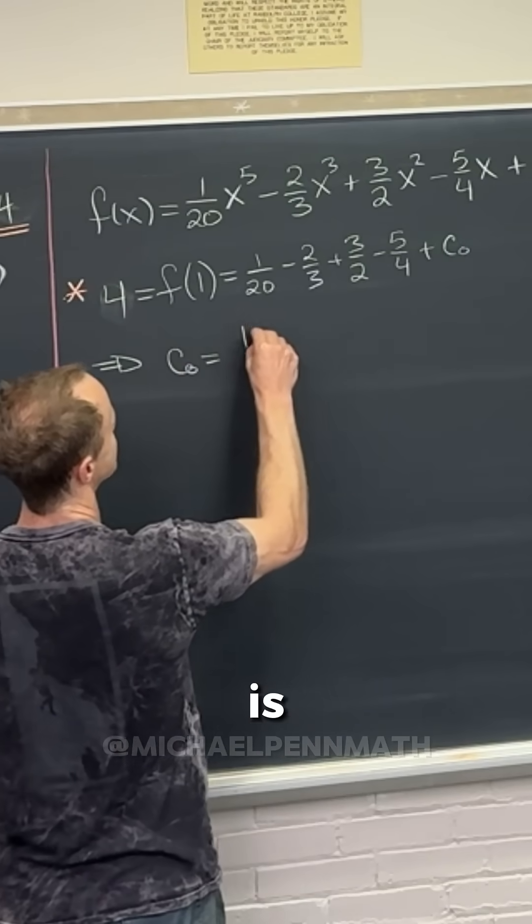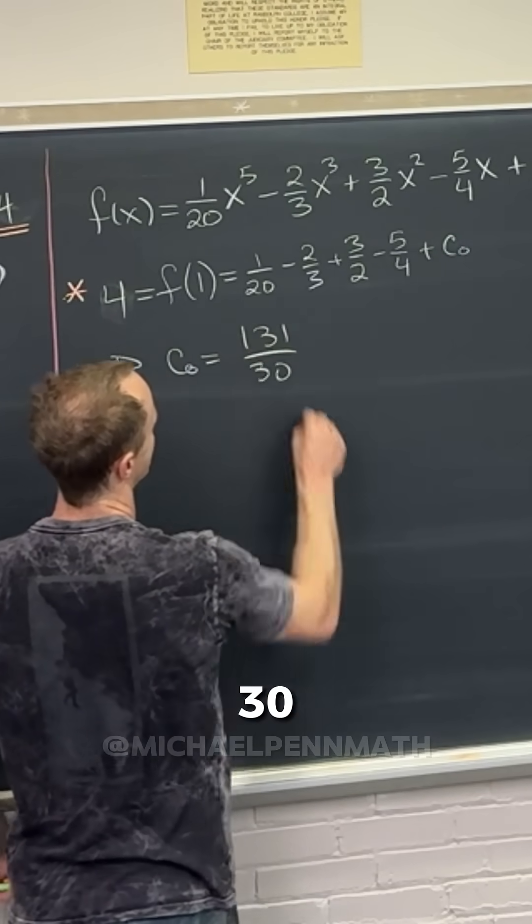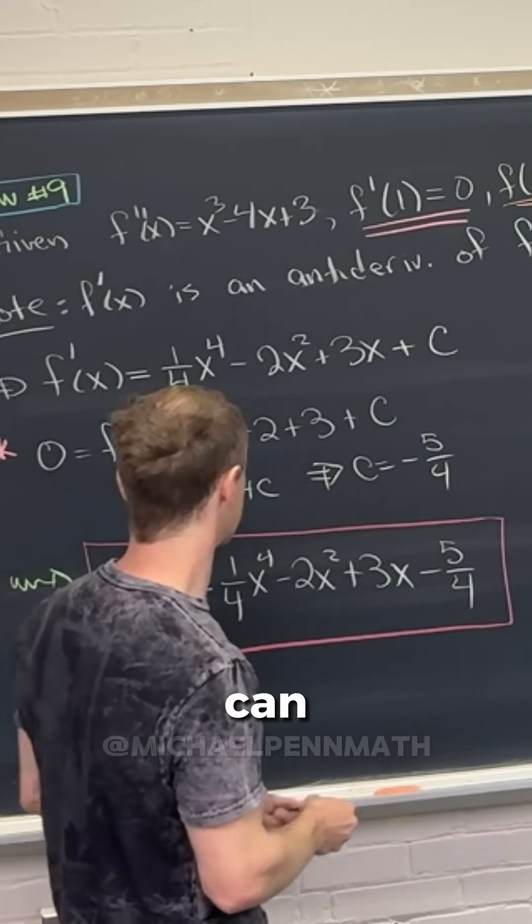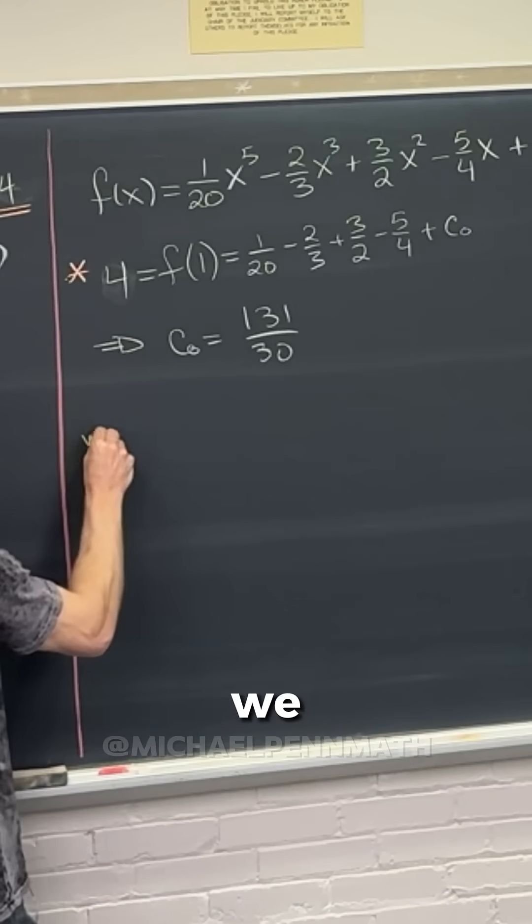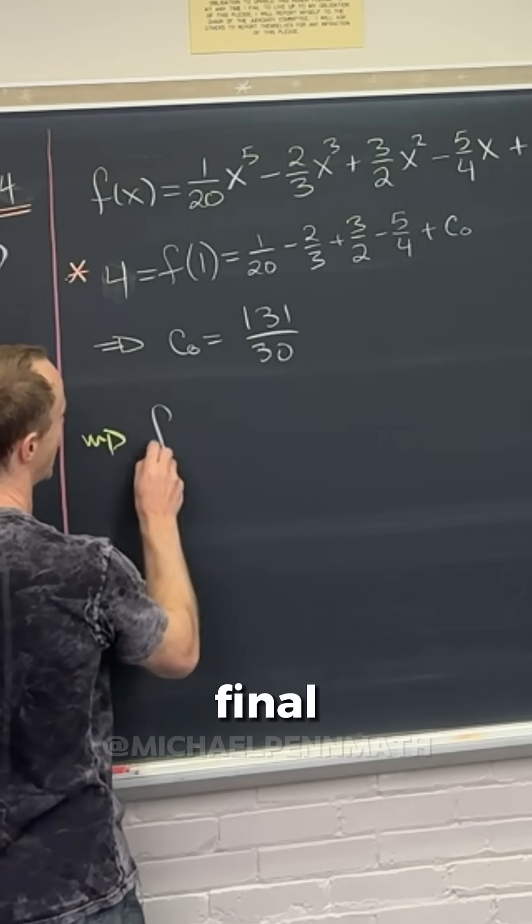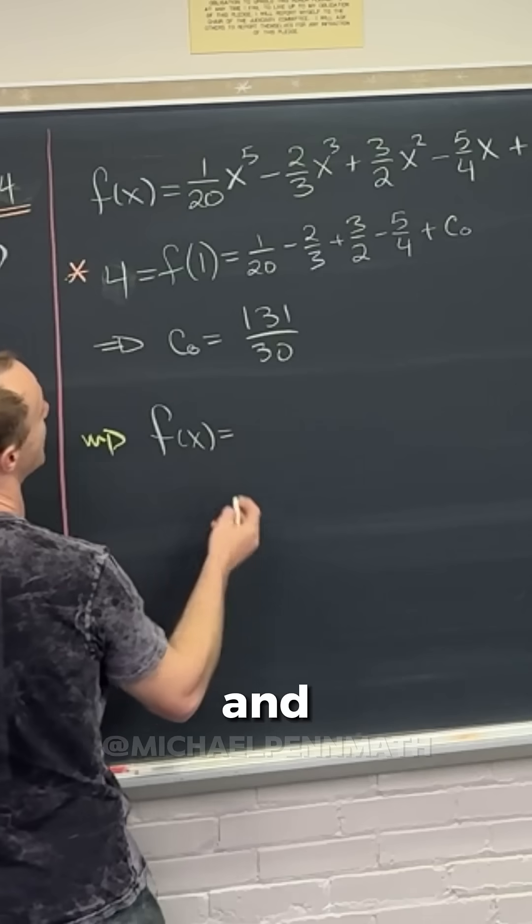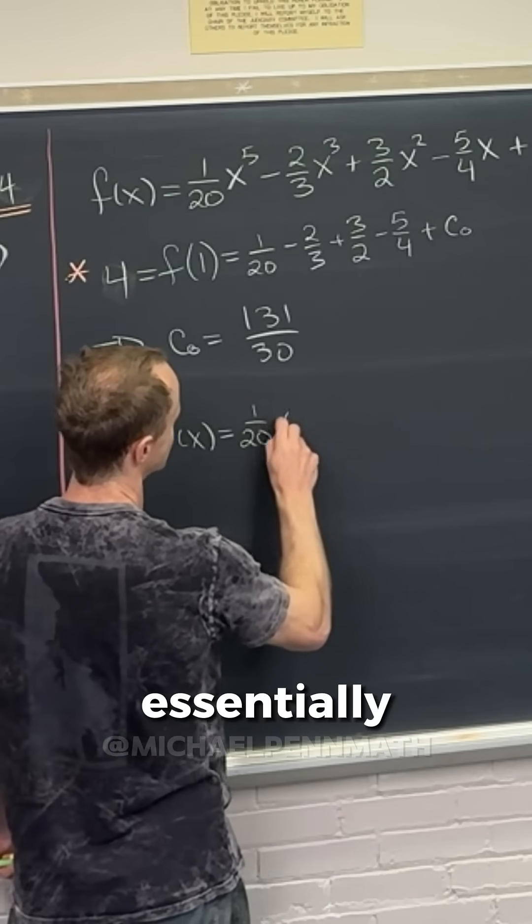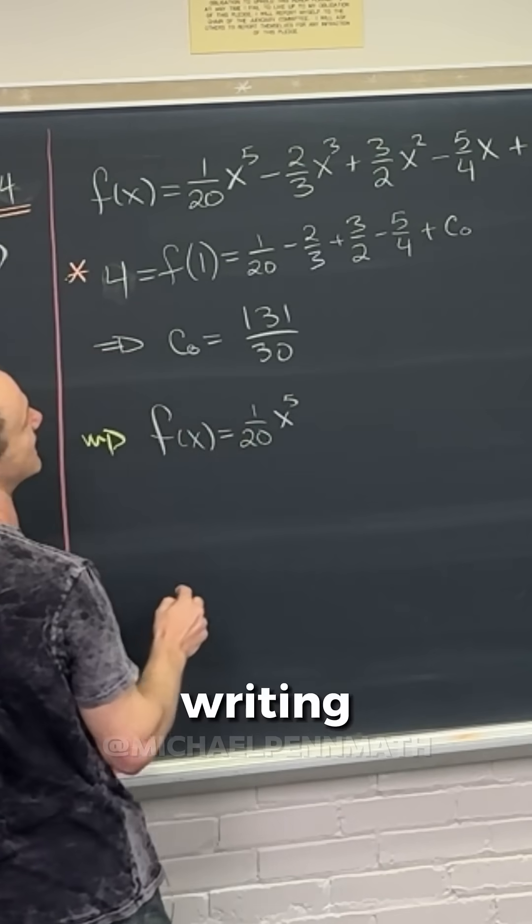And in this case, you get 131 over 30. So we have c naught is 131 over 30. But from there, we can smash it all together with what we have above. And we'll have a final version for f of x. And that's, I'm essentially just copying everything over.